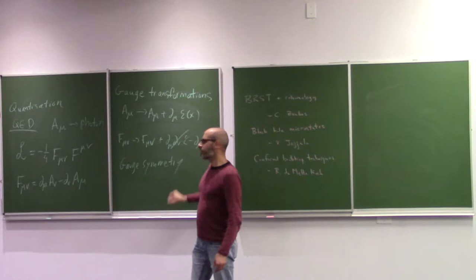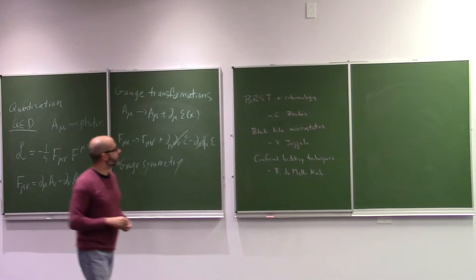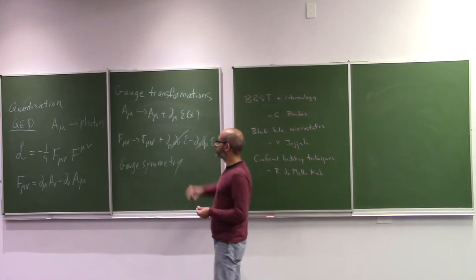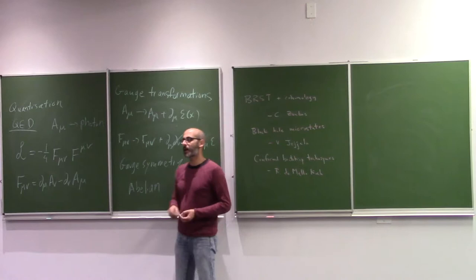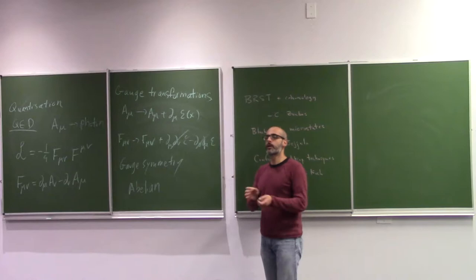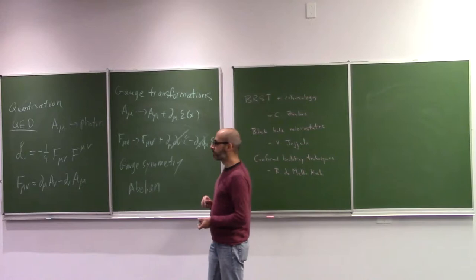Gauge symmetries are hugely important in quantum field theory. They essentially guide our choices of Lagrangians and the theories that we construct — based on which kinds of gauge symmetries we want. In this case, it's a very simple gauge symmetry which only has one parameter, and it is called abelian. Later in these lectures, we may touch upon what happens when we look at non-abelian gauge theories — theories with many parameters where different transformations don't commute with each other. But for now, focus on the abelian situation.